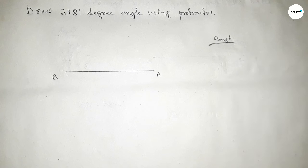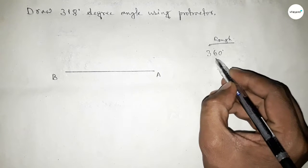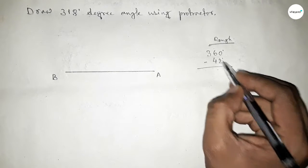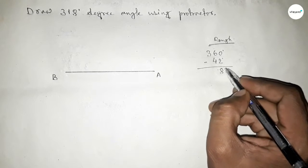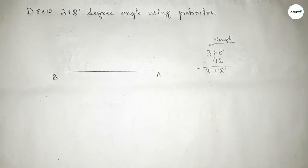Now roughly discussing some important calculation here. If we subtract 42 degree angle from 360 degree, then we can get 318 degree angle. So subtracting, this is 8, carry on, so this is 1, so 318 degree angle.